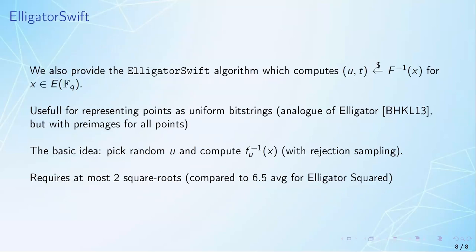Finally, we also present the ElligatorSwift algorithm, which is the one that computes a random pre-image. This is useful for representing points as uniform bit strings, which was the main idea of the Elligator construction. The way it works is just by picking a random u and trying to invert fu of x.